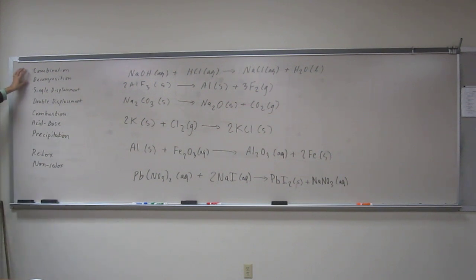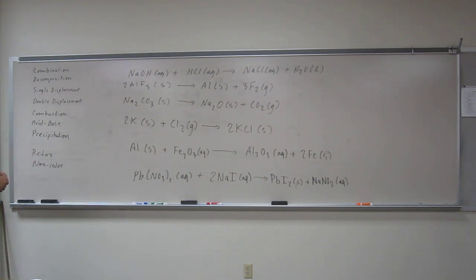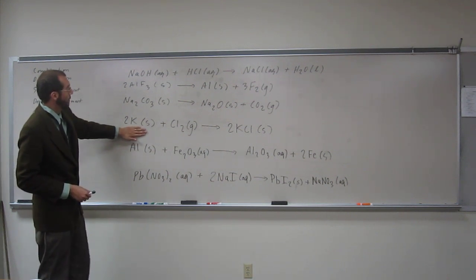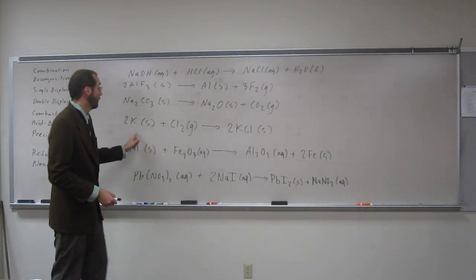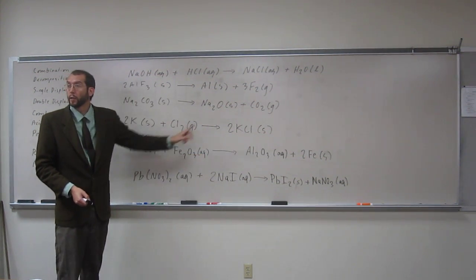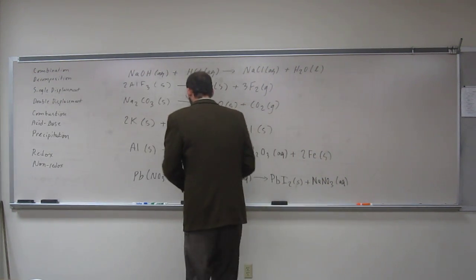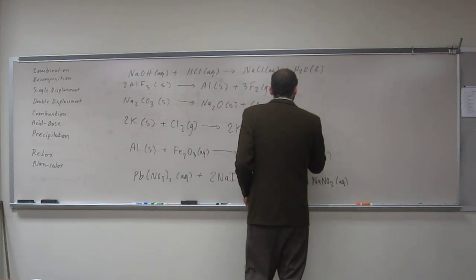Some of the easier ones may be combination and decomposition. Combination means if you've got two or more things and they make one thing. So if we look here, we've got potassium plus chlorine and it goes to potassium chloride. We have two starting materials and it goes to one product. That's definitely a combination reaction.